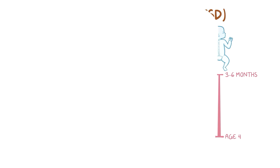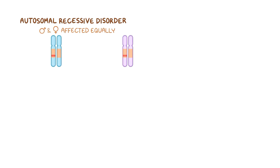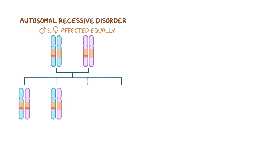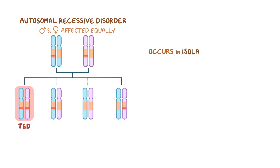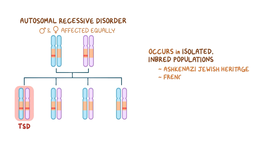TSD is an autosomal recessive genetic condition, so males and females are affected equally, inheriting one mutated HEXA gene from each asymptomatic or heterozygous parent in order to develop the homozygous condition. This also means that TSD tends to occur in isolated, inbred populations or communities, which accounts for the predominant occurrence of the disease in infants of Ashkenazi Jewish heritage, and in certain French-Canadian, Amish, and Cajun populations.